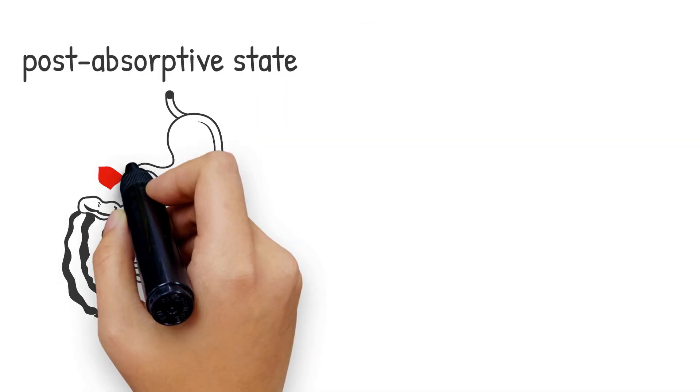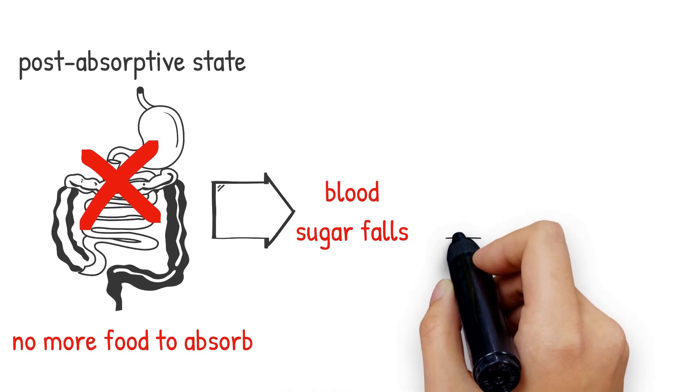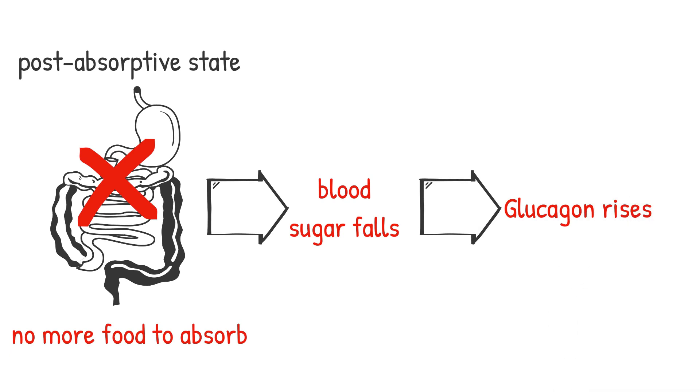In post-absorptive state, there is no more food in your gastrointestinal system to absorb. This causes a fall in level of blood sugar, which increases the level of glucagon hormone from your pancreas.